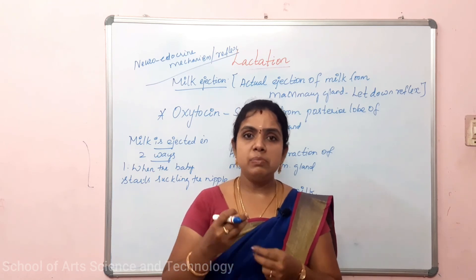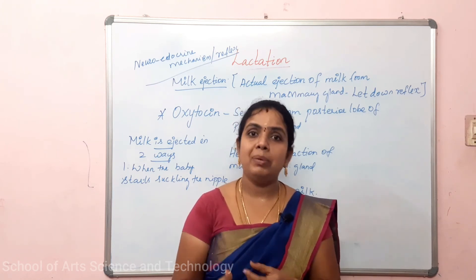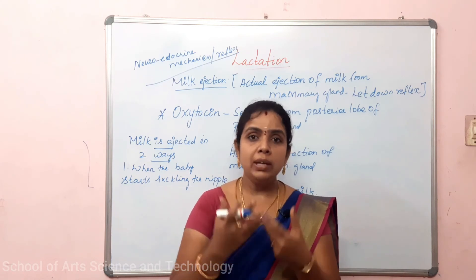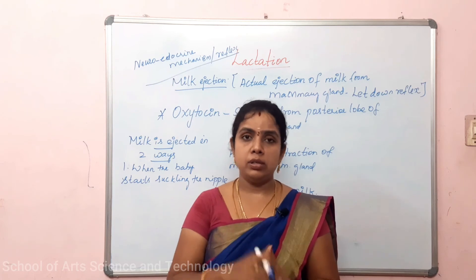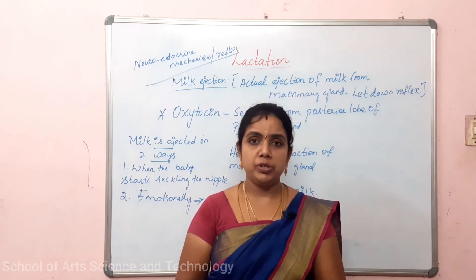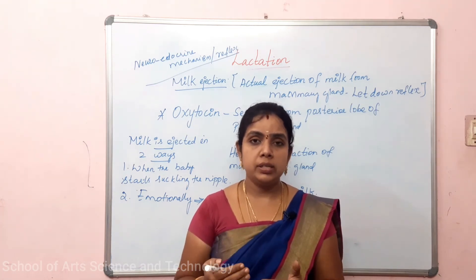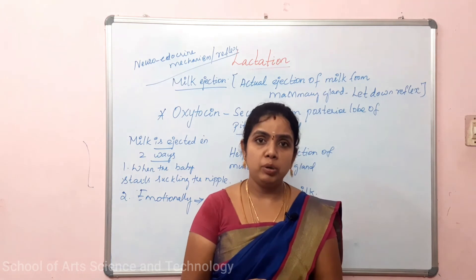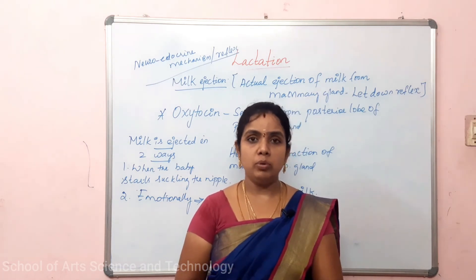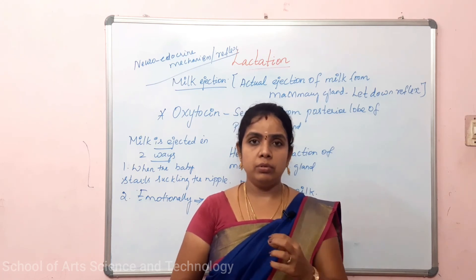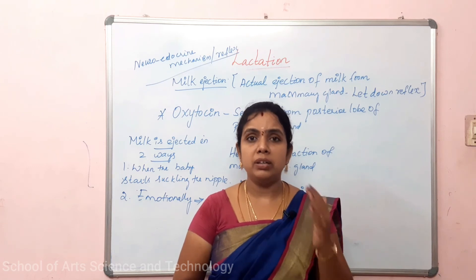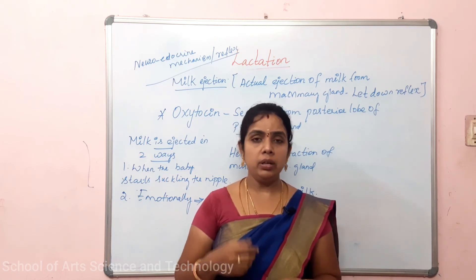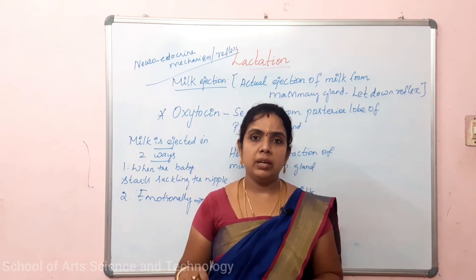A second way oxytocin can be released is through psychological stimuli — even thinking about or touching the baby can trigger oxytocin release. Additionally, after delivery, the oxytocin hormone helps the uterus return to its normal pre-pregnancy size.